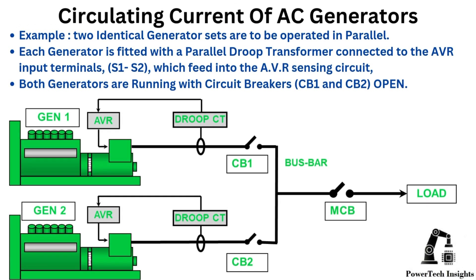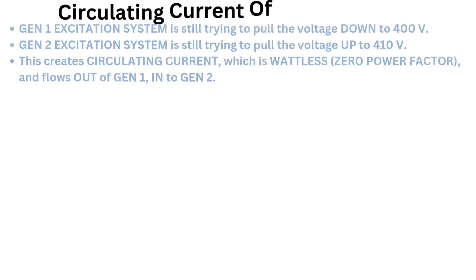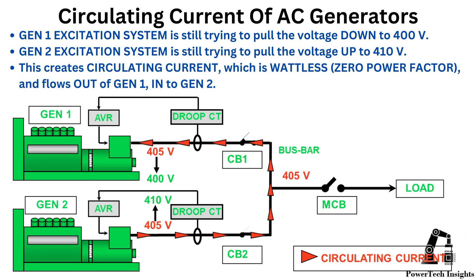Example: Two identical generator sets are to be operated in parallel. Each generator is fitted with a parallel droop transformer (CT) connected to the AVR input terminals S1, S2, which feed into the AVR sensing circuit. Both generators are running with circuit breakers CB1 and CB2 open. Consider the situation where, before closing the breakers, Gen 1 voltage is set at 400 volts and Gen 2 voltage is set at 410 volts. The generators are synchronized and CB1, CB2 are closed. The resultant bus bar voltage will be 405 volts, as the voltages cannot be different when the generators are paralleled. Gen 1's excitation system is still trying to pull the voltage down to 400V, while Gen 2's excitation system is still trying to pull the voltage up to 410V. This creates circulating current — which is wattless, zero power factor — flowing out of Gen 1 and into Gen 2.